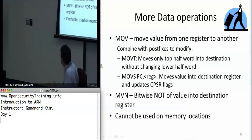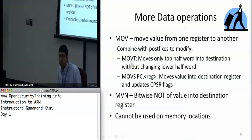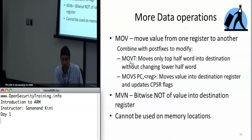There are variations on MOV. One of them is MOVT, which moves the top half-word of the 32-bit value into the destination register.